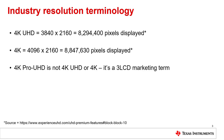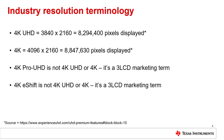3LCD provides several marketing terms, such as 4K Pro UHD and 4K eShift. None of these resolutions provide true 4K. Instead, these projection systems provide only 4 million pixels onto the screen.